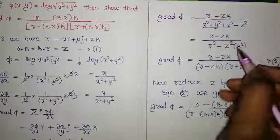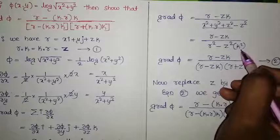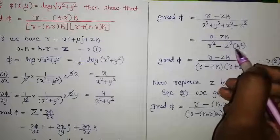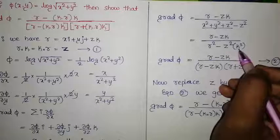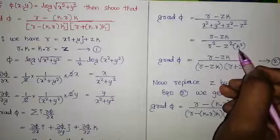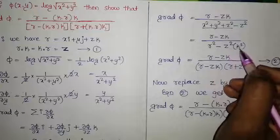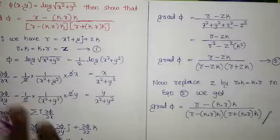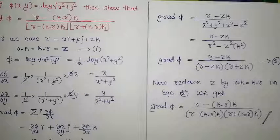This is our required result. Here, z is in the k direction, x in the i direction, and y in the j direction. Multiplying z by k squared equals 1 since k is a unit vector, so there is no change. By solving this, we get the required result.